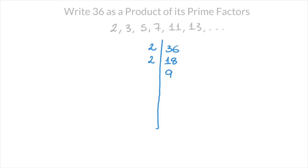I carry on this way. I look for the smallest factor of 9 that I see in this list of prime numbers, and the smallest factor in this case is 3. So I write 3 to the left of 9, and I divide 9 by 3, which is 3. The smallest factor of 3 in this list is itself — that's 3. So I write 3 to the left of 3, and 3 divided by 3 equals 1, which I write directly below the 3. And once we've reached 1, we stop.